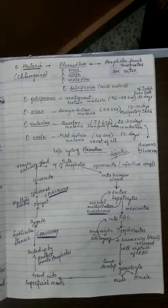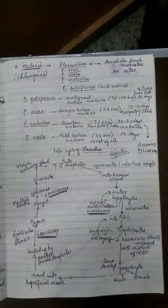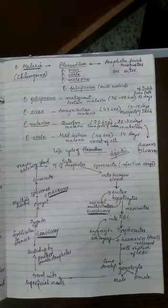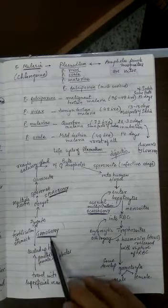So now what happens? Female mosquito takes up the gametocytes with the blood meal, and then when they reach the stomach, these male and female gametocytes undergo fertilization. As they undergo fertilization, this process can be called gamogamy, so gamogony.